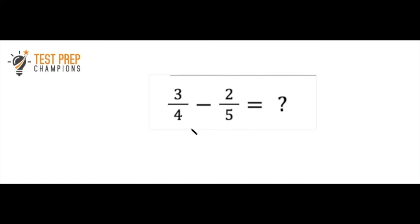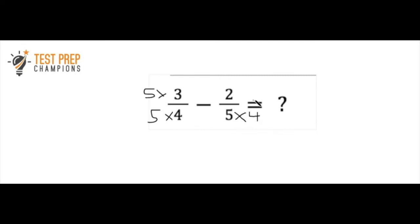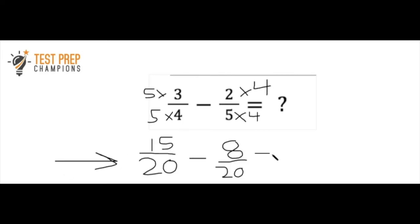It's a subtraction question, so we check our denominators. We've got a four and a five — they're not the same. We multiply the top and bottom of the first fraction by five, and the top and bottom of the second fraction by four. Rewriting: fifteen over twenty minus eight over twenty. Fifteen minus eight equals seven, and we keep the denominator as twenty. The answer is seven over twenty.